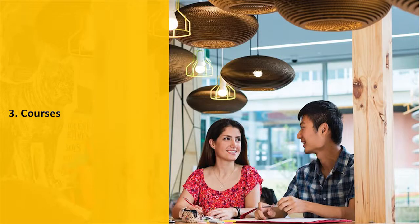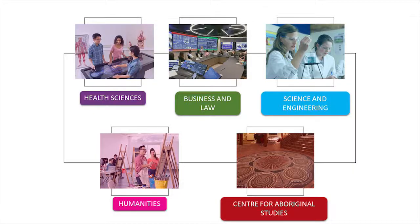Now we're going to go through some of the study areas. All of our study areas fall under five clusters: health science, business and law, science and engineering, humanities, and the Centre for Aboriginal Studies, also known as CAS. CAS has bachelor degree and enabling programs with extra cultural support. If you want to learn more about courses available through CAS, just jump onto the website and you can contact the team there.